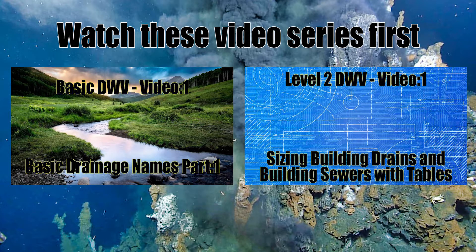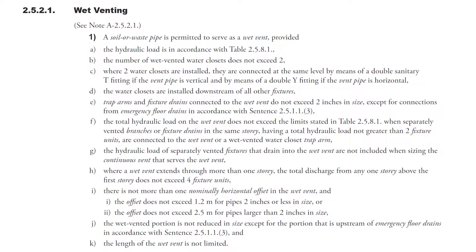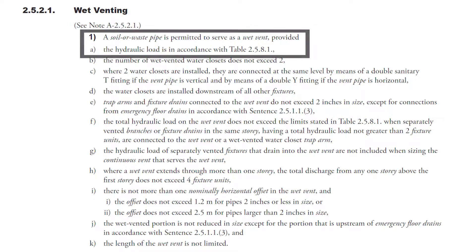For those of you new to this topic, no problem — I have two video series: Basic Drainage Waste and Venting, and Level 2 Drainage Waste and Venting. So let's start with Clause 2521-1A. A solar waste pipe is permitted to serve as a wet vent provided the hydraulic load is in accordance with Table 2581.